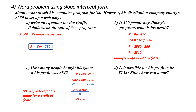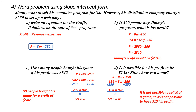Part D: is it possible for his profit to be $154? I start with the equation and replace p with 154. I add 250 to both sides to get rid of minus 250, giving me 404 equals 8w. I divide both sides by 8, giving me w equals 50.5. So is it possible for his profit to be $154? No — you should recognize that it's not possible to have half a program. Therefore, it is not possible.